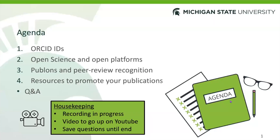The agenda for today focuses on four key areas. We're going to focus on ORCID IDs, then move on to talk about open science and open science platforms and data repositories. We'll move on to peer review recognition through Publons, and then talk about some resources to promote your publications in the academic community. We'll wrap that up with a Q&A session. The presentation should take about 20 minutes, and the Q&A we can leave open for 10 to 15 minutes at the end.